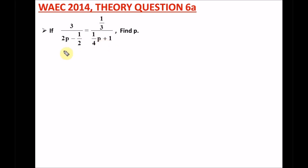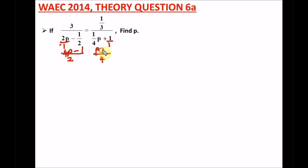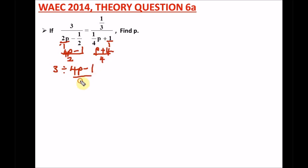Let's find the LCM of what's below here. This will be over one and this will also be over one. The LCM of one and two gives us two. So one into two is two, and two times 2P gives us 4P. Minus two into two is one, times one gives us one. Here, the LCM of four and one is four. Four into four is one, times P gives us P. One into four is four, times one gives us four.